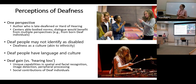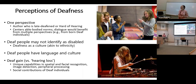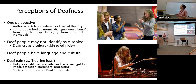Deaf people might not identify as disabled at all. They have language — sign language — they have a culture, almost like an ethnicity in some ways. They'll talk about deaf gain: people who've lost their hearing have increased capabilities in spatial and facial recognition, image detection, and peripheral processing, and they use that to make social contributions. Why don't we talk about that? Who decides how we frame this? The textbook is coming from an authority, but it is one perspective from an author who is late-deaf or hard of hearing, and it does center able-bodied norms. It would benefit from more perspectives — from people who are born deaf, for instance.